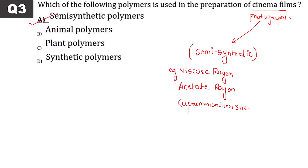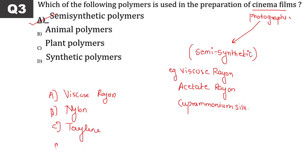The question could change to: which polymer is used in preparation of photographic film? Options may include viscose rayon, nylon, terylene, teflon. The semi-synthetic one is viscose rayon — cellulose rayon. Viscose rayon, acetate rayon, cuprammonium silk all fall in this category.